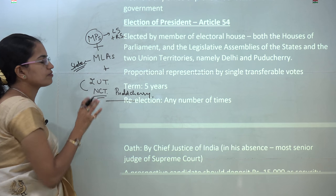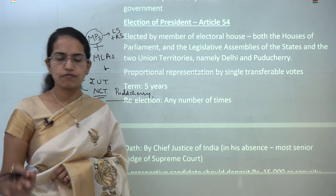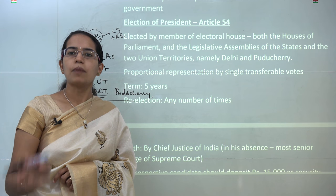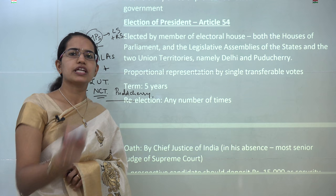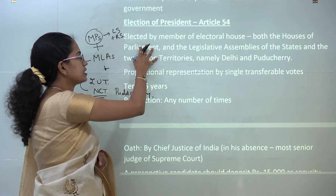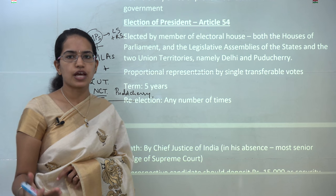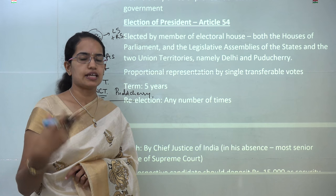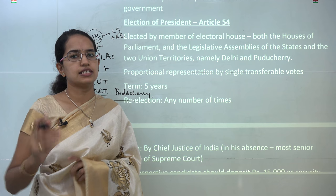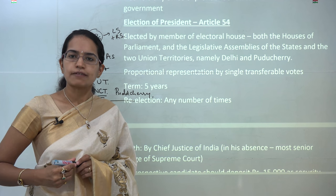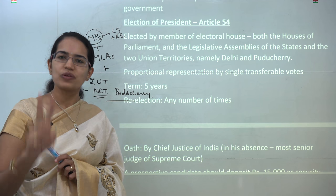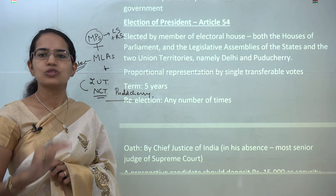The term of the president in India is 5 years, as compared to the United States where it's 4 years. In India we have a parliamentary form of government, while in the United States it is a presidential form of government. In India there can be re-elections any number of times — the same president can be re-elected any number of times. However, in the United States re-election is allowed only once, meaning the president can serve only two consecutive terms.